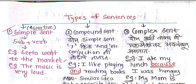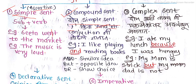The second type is the compound sentence. In a compound sentence, there are two simple sentences joined by a conjunction like 'and,' 'but,' or 'or.' For example: 'I like playing and reading books.' Use 'and' to show similar ideas, 'but' for opposite ideas, and 'or' for choices.